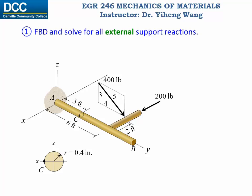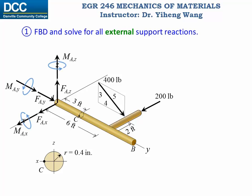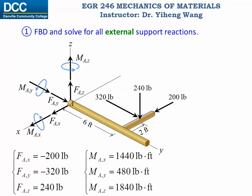We remove the support at point A and add our unknown support reactions. Because this is a fixed support, we have overall six unknowns — three force reactions and three moment reactions — and through equilibrium we can solve for all six of them.